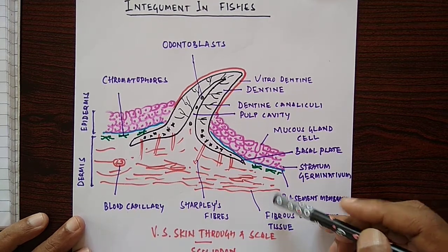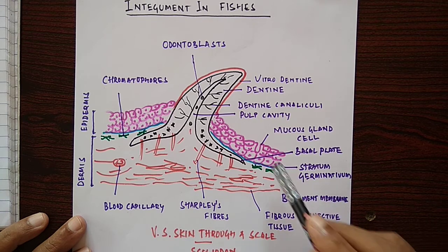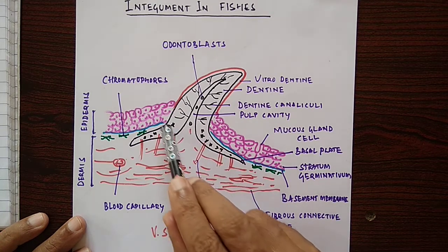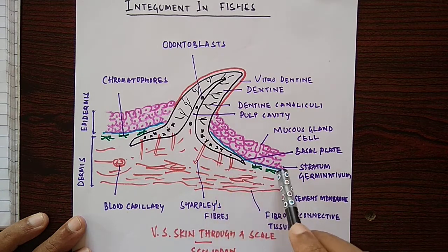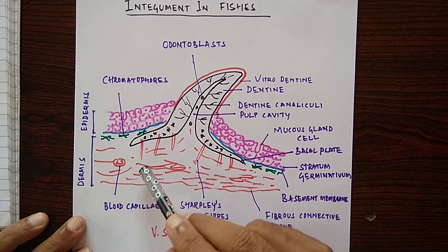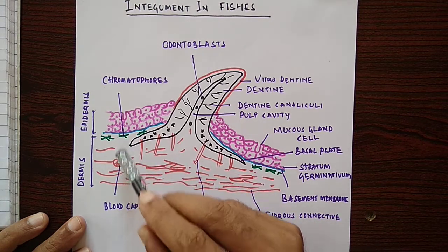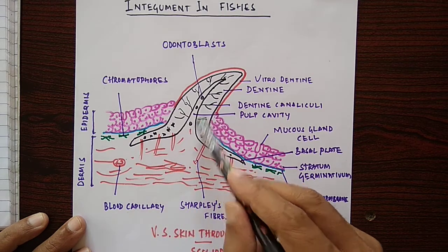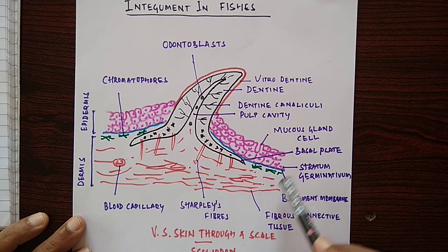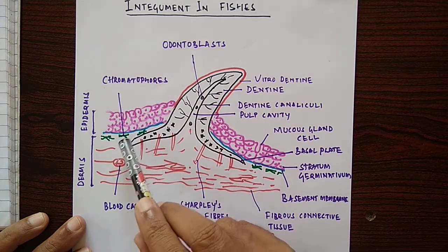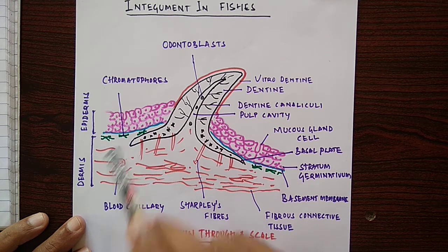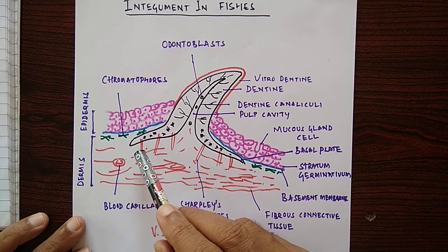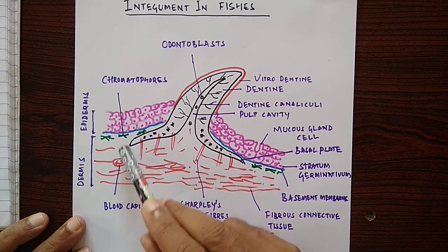Coming to dermis: the stratum germinativum of the epidermis lies on the basement membrane, which is produced by the dermis. Comparatively, the dermis is thicker than the epidermis. Scales are embedded in the dermis, and just below the basement membrane you can see chromatophores. Chromatophores contain pigment granules that produce color in the skin.